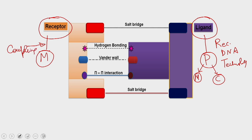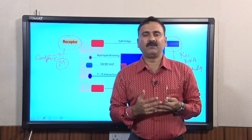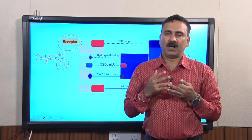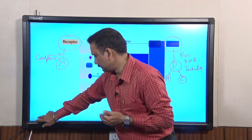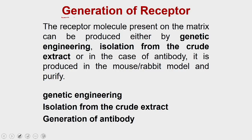Today we are going to discuss how to generate the receptors and how to couple that receptor to the affinity chromatography so that you will prepare an affinity column to purify the analyte of your choice. At the end of this lecture, we are also going to discuss how to operate the affinity chromatography columns. The prime requirement is that you should have the flexibility or the ability to generate the receptor.